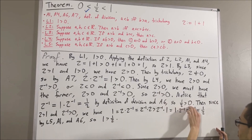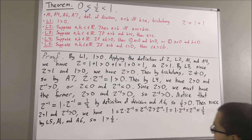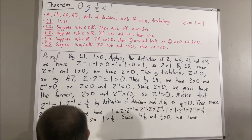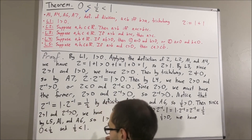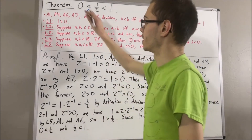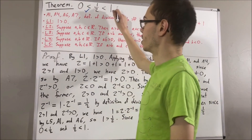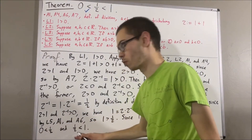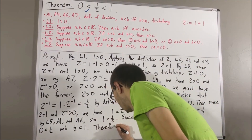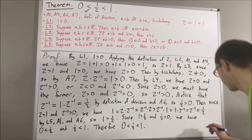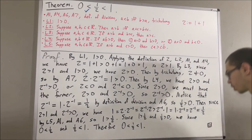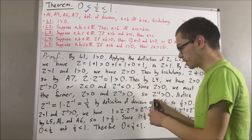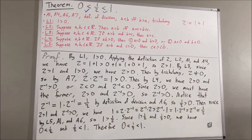Since 1 is greater than 1 half, we have 1 half is less than 1. Since 1 half is greater than 0, we have 0 is less than 1 half. This is really just shorthand for saying 0 is less than 1 half and 1 half is less than 1. So we're done — this completes the proof.